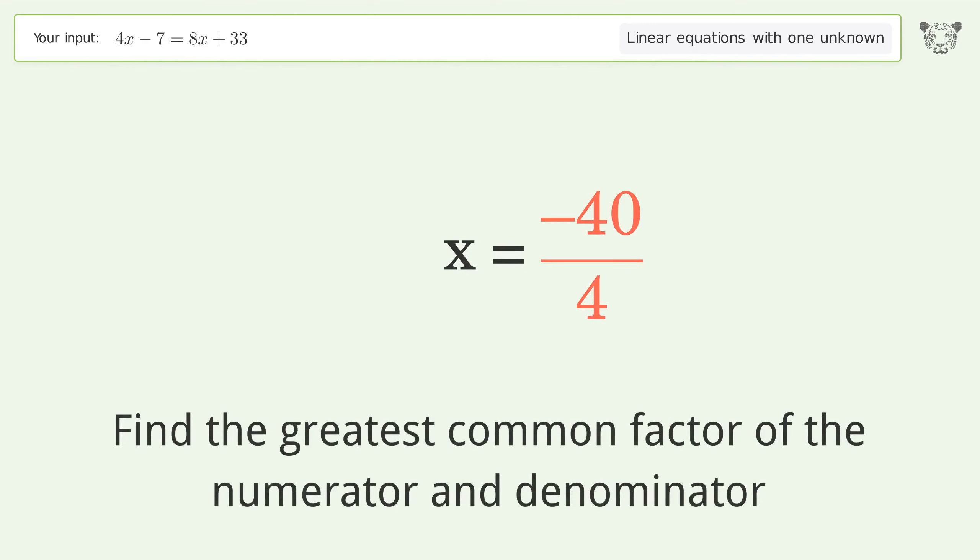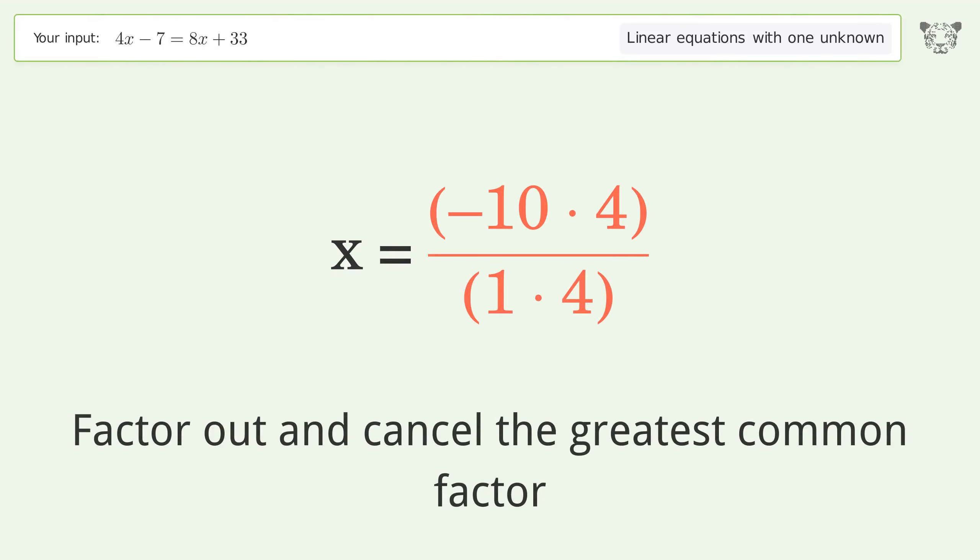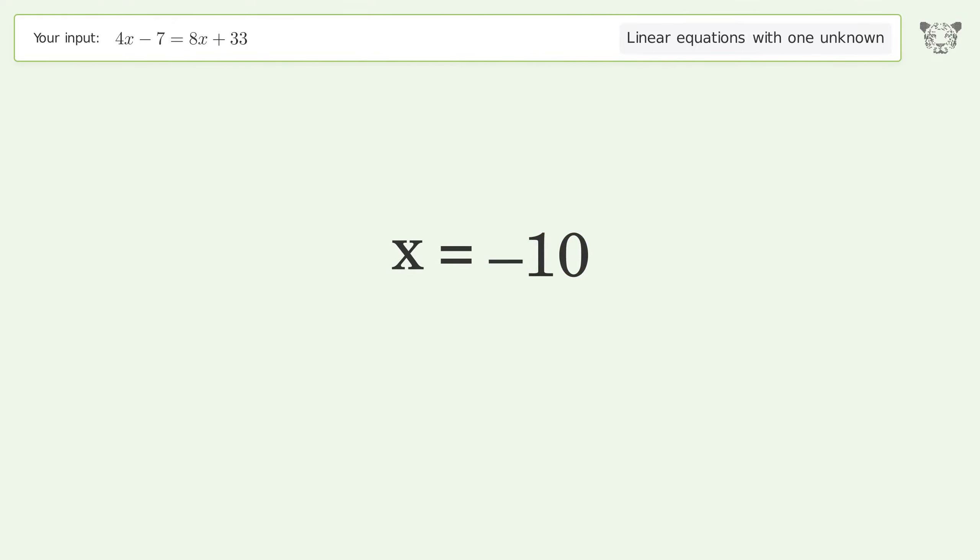Find the greatest common factor of the numerator and denominator. Factor out and cancel the greatest common factor. And so the final result is x equals negative 10.